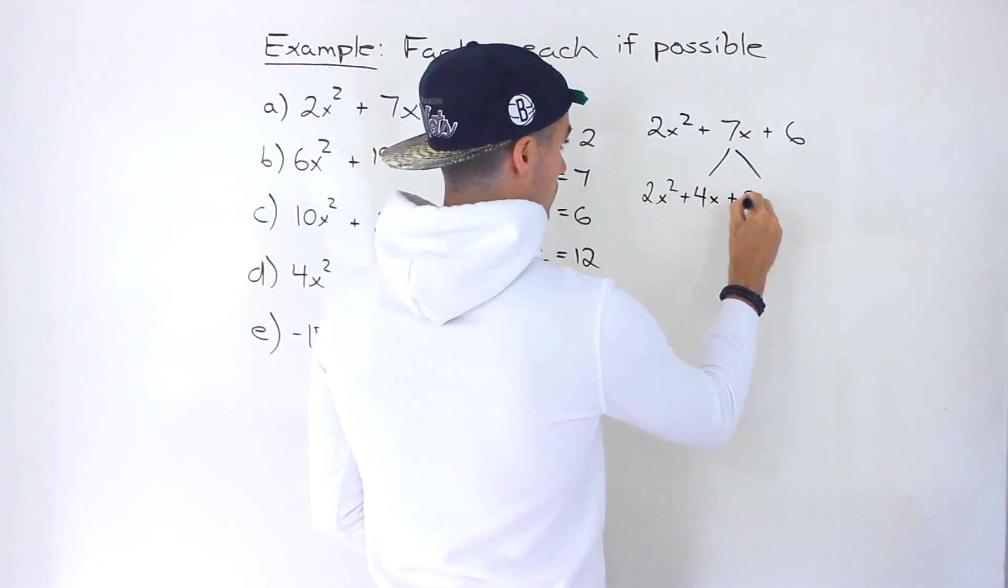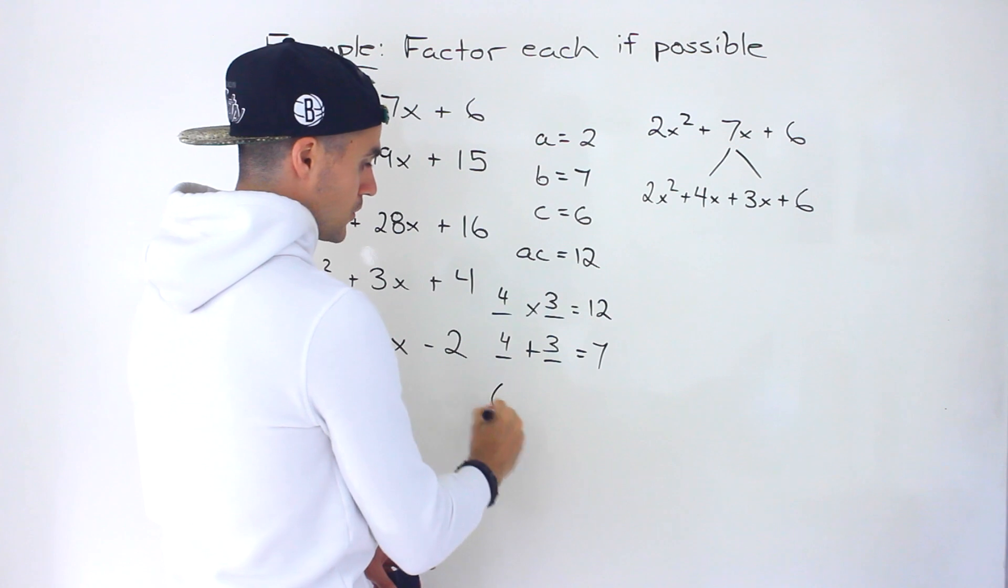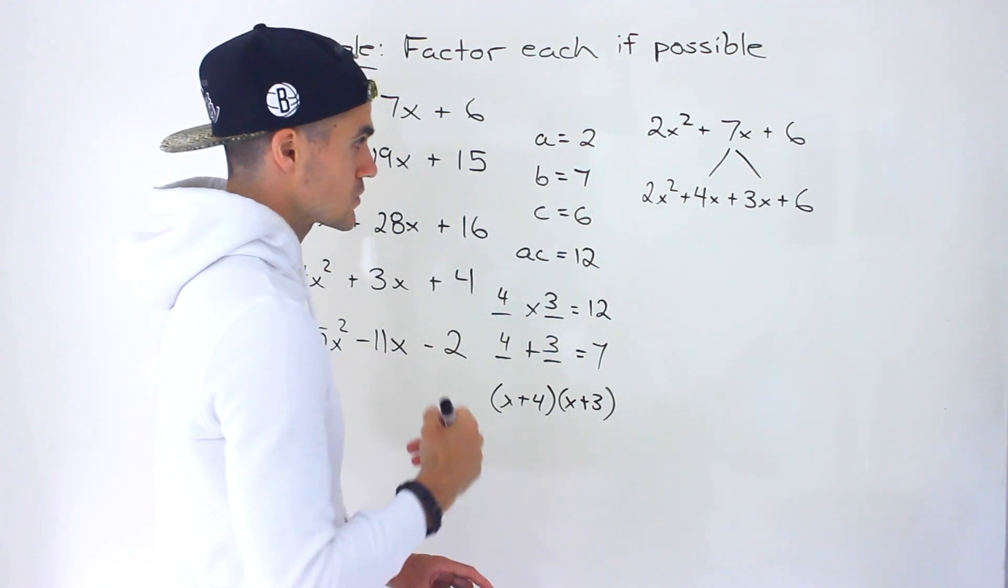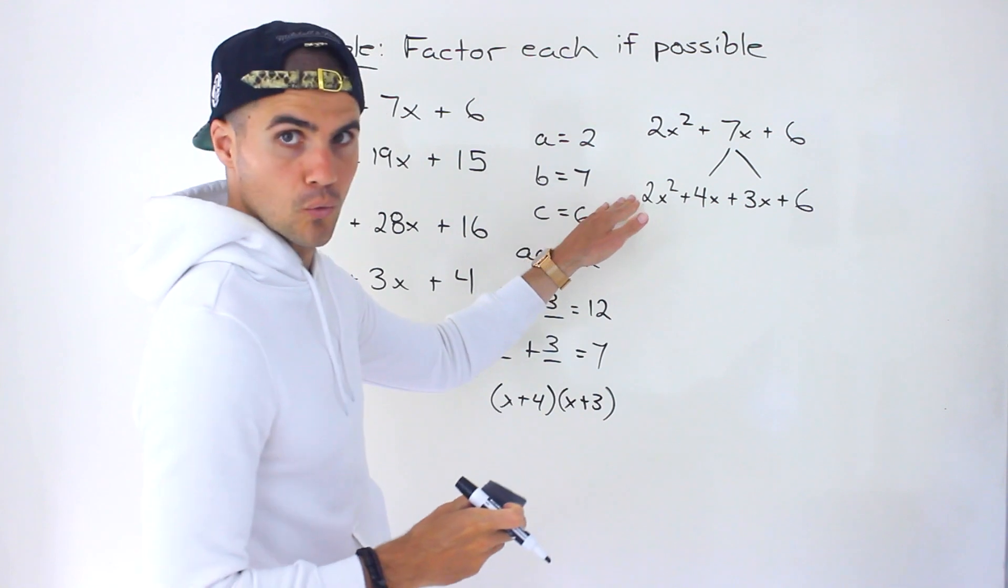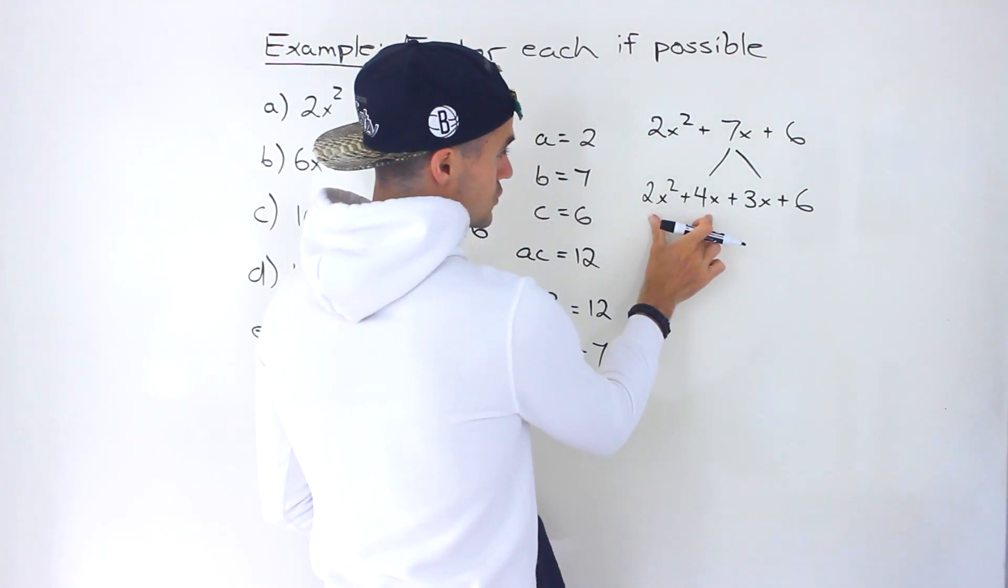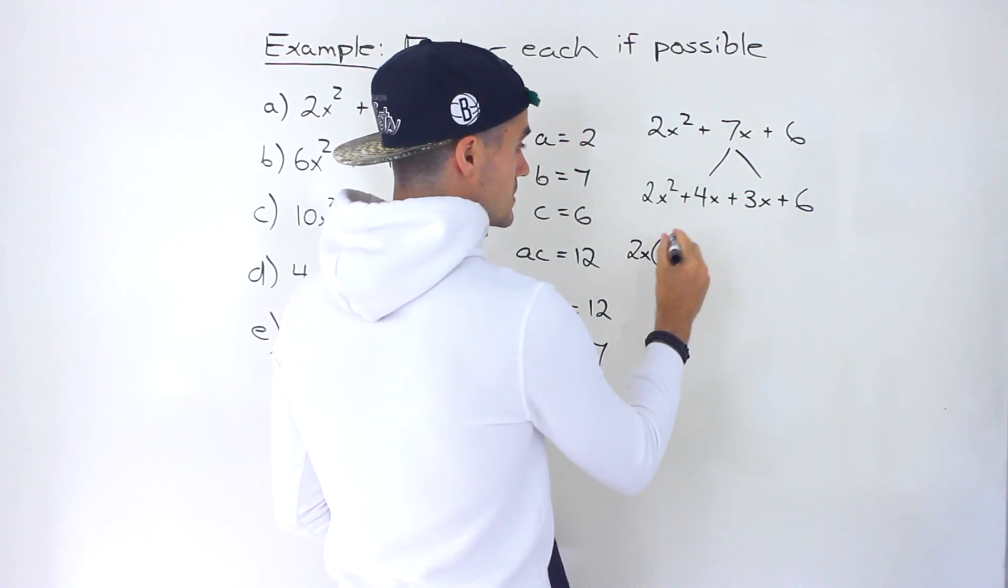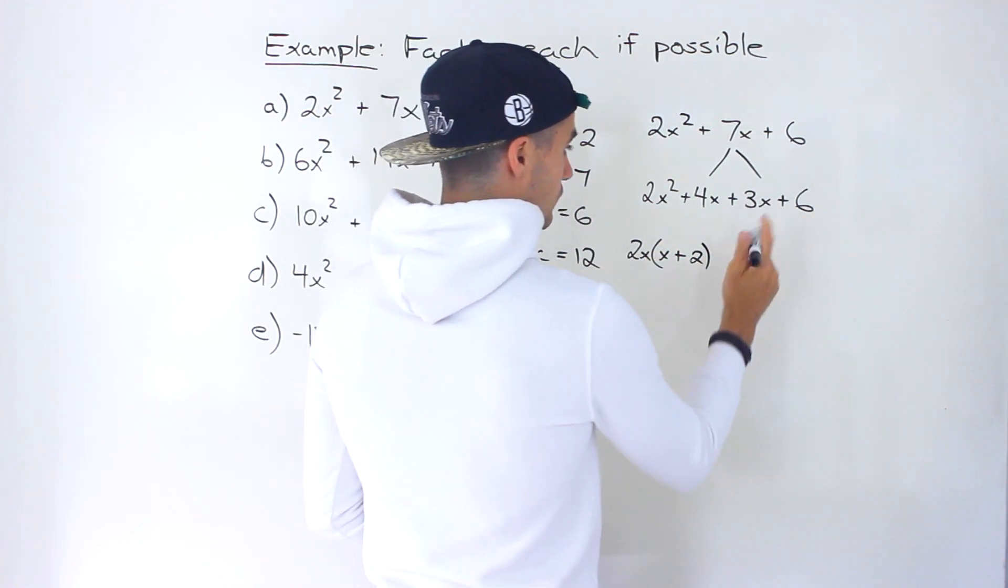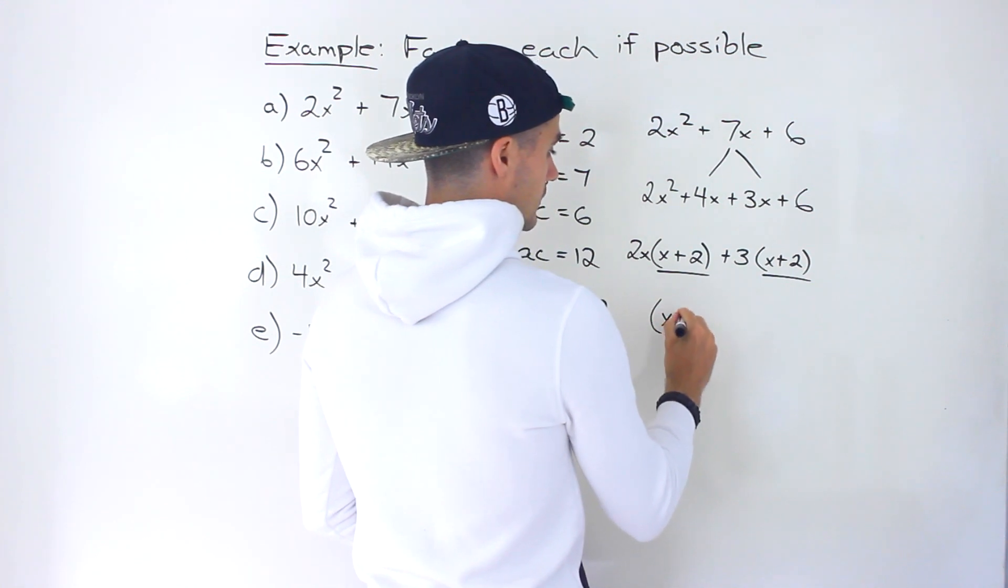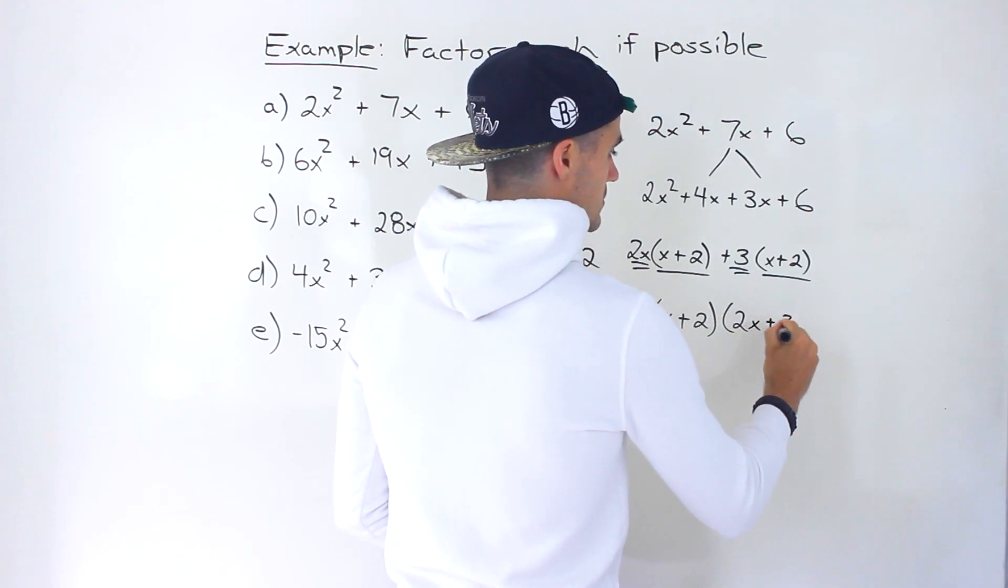We've got to do the full process here of decomposition, of factoring by grouping. Before when the A value is 1, at this point we were able to just get those two factors as a shortcut. Unfortunately here, it's not going to work. From these first two, what can we take out? We could take out a 2x. We'd be left with x + 2 in brackets. From these two, we could take out a 3 and we'd be left with x + 2. Then we could take out this binomial common factor x + 2, and we'd be left with 2x + 3.